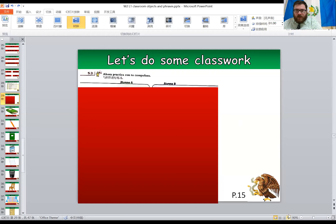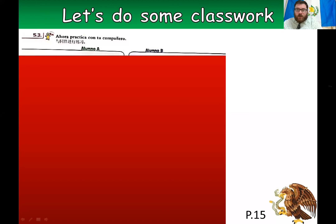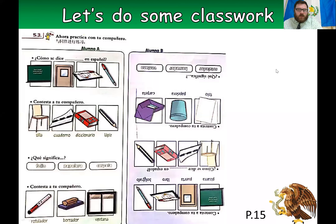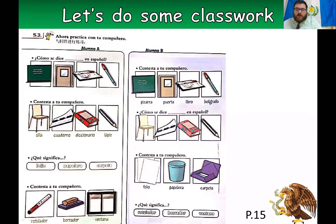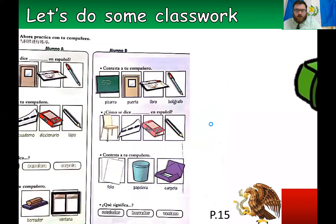So this is a little activity in the course book that we were supposed to be doing in class, but of course we're not gonna be doing that because we're online. One student would have a group of objects with their names, another student would have another set, and then you need to talk to each other to figure them out. We're not gonna be able to do that, so I made slides of each of these and we're going to talk about them.